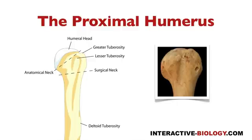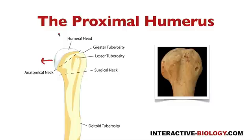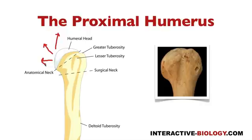So here we're looking at the proximal humerus, and there are a number of structures that I want to point out. But before I talk about those structures, I want to talk about the fact that when we look at the humerus and we look at the head of the humerus, it projects medially, superiorly, and posteriorly. Right now we're looking at the left humerus. So if I want to tell if this is a left or a right humerus, I would take this humerus and make sure that the head is pointing superiorly, posteriorly, and medially, and that will show whether it's left or right.